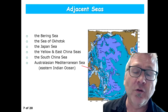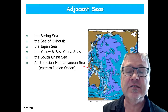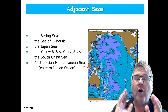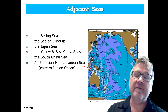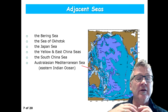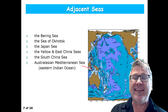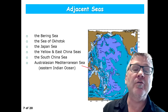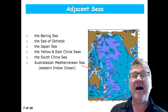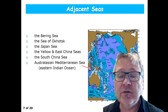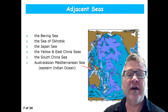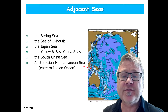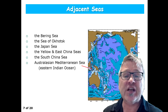Let's go on a journey through all the adjacent seas, and they're all on the western side. The continental shelves are very, very narrow on the eastern margin of the Pacific Ocean. On the western side, you have pronounced shelf seas.